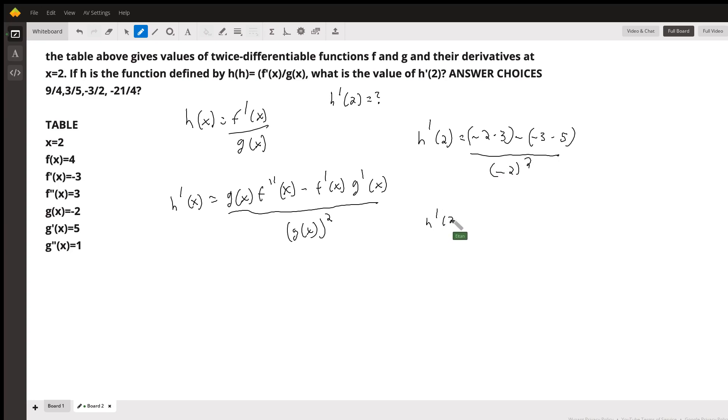So h prime of 2 equals negative 6 minus negative 15 over 4, and then h prime of 2 equals negative 6 plus 15 over 4, which equals 9 over 4.